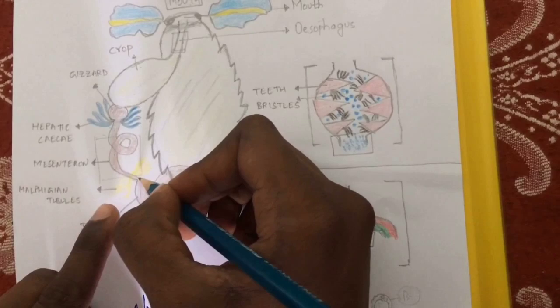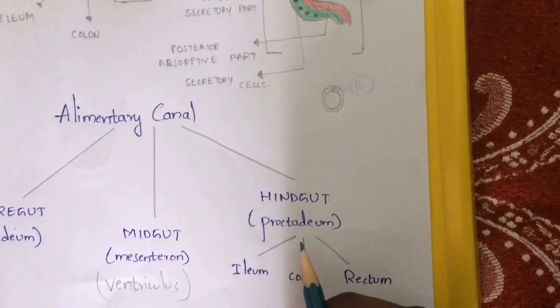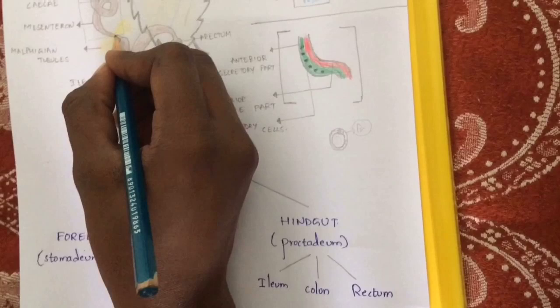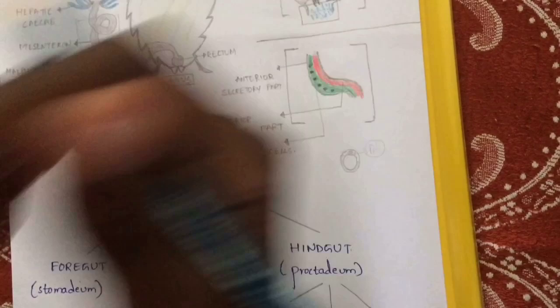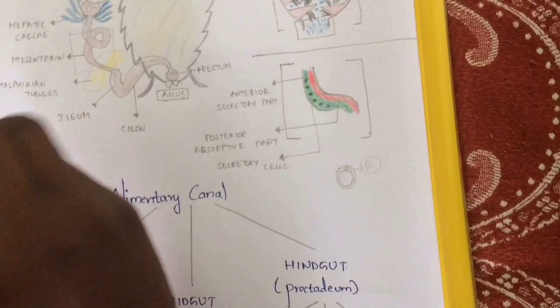The food which enters the mesentron finally reaches the next part, that is the hindgut. Hindgut is commonly known as proctodeum. At the beginning of the hindgut, there are Malpighian tubules. The function of the Malpighian tubules is mainly secretion of uric acid.